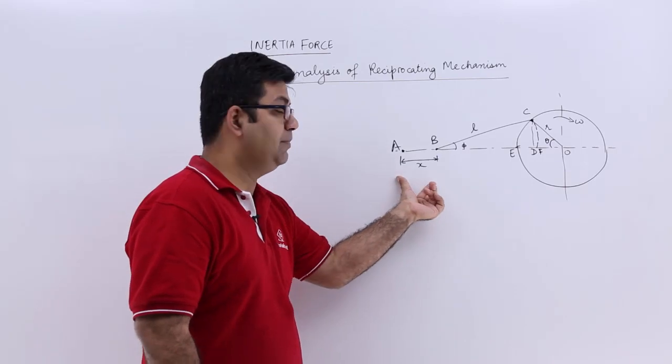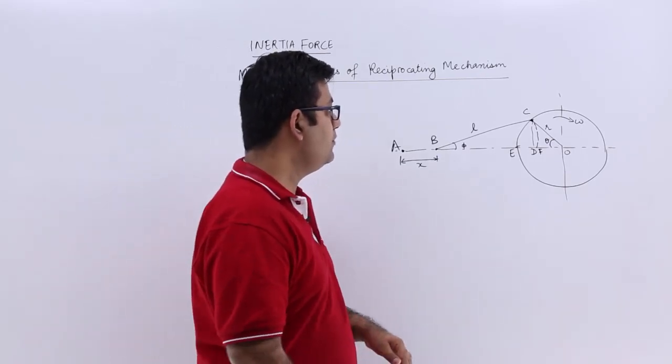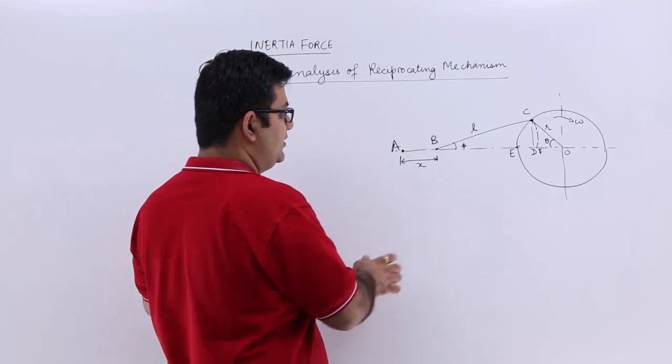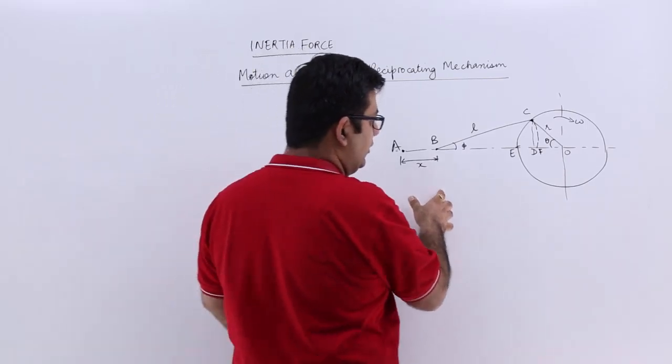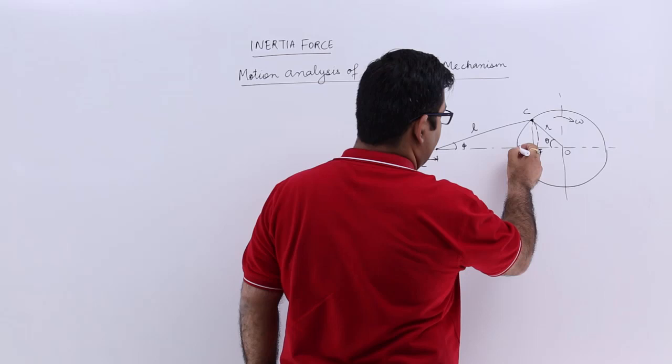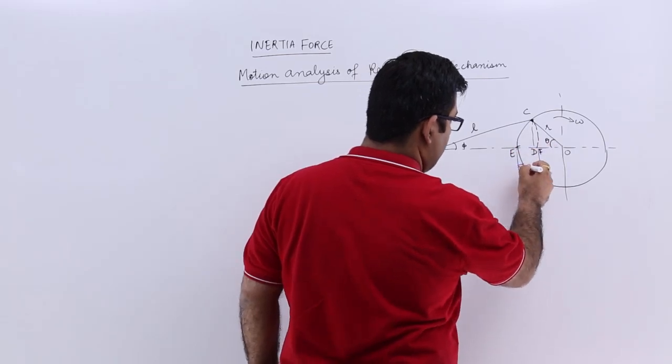So there is a linear displacement X. Now what happens is this distance X is equal to this distance EF.